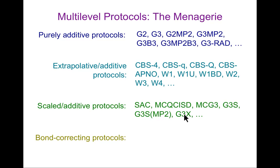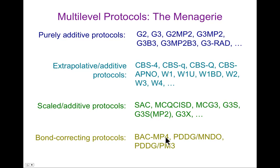There are also so-called bond-correcting protocols — accepting that whatever approach you use will have some sort of transferable error for having certain kinds of bonds in your molecule. BAC-MP4 (Bond Additivity Correction MP4) is an example. At the semi-empirical level, the pairwise distance-directed Gaussian models adopt a similar approach of massaging the potential energy surface by putting in little attractive or repulsive Gaussians, which can be viewed as a bond correction protocol.